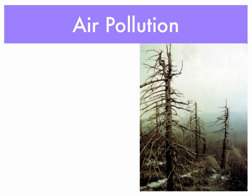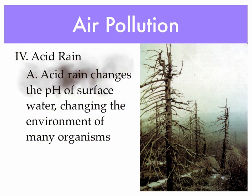Another type of air pollution that we're probably more familiar with is acid rain. Acid rain is pollution, and one of its main effects is that it actually changes the pH of the water, which changes the environment of many organisms. It also, as we can see in the picture, changes the pH of the ground that it rains on and can kill plants. So acid rain actually has an impact on both water and soil.